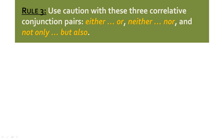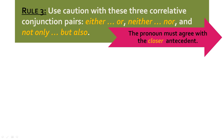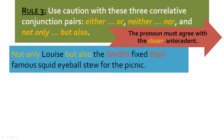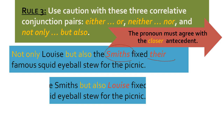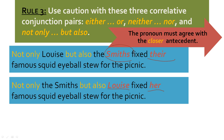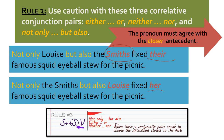Our next rule is very familiar. Use caution with these three correlative conjunction pairs: either/or, neither/nor, and not only/but also. Only the pronoun closer to the antecedent is going to matter. For example: 'Not only Louie's, but also the Smiths' fixed their' — Smiths' is plural, 'their' is plural. And 'Not only the Smiths', but also Louie's' — Louie's is singular, 'her' is singular. When not only/but also, either/or, or neither/nor appear, we choose the antecedent that's closest to our verb.